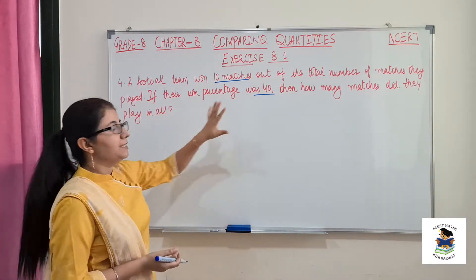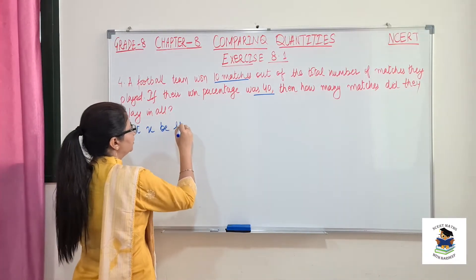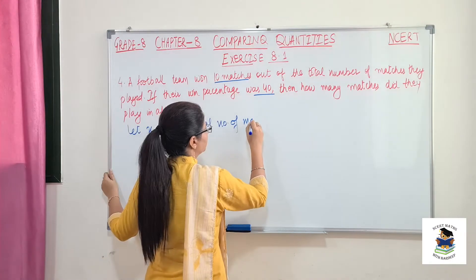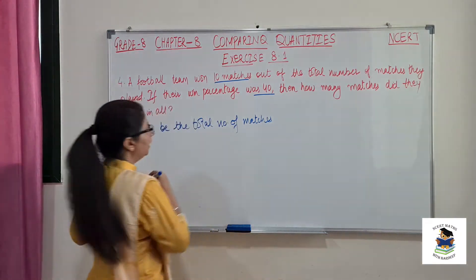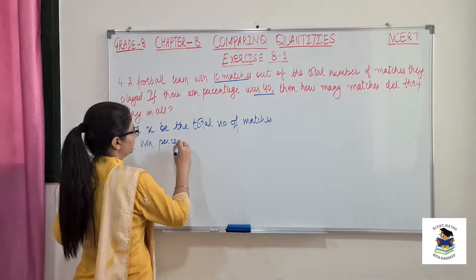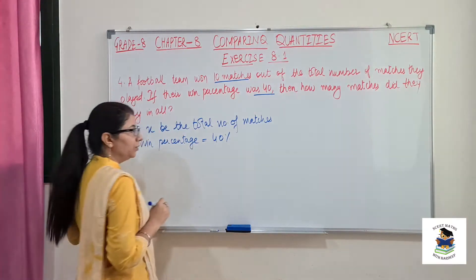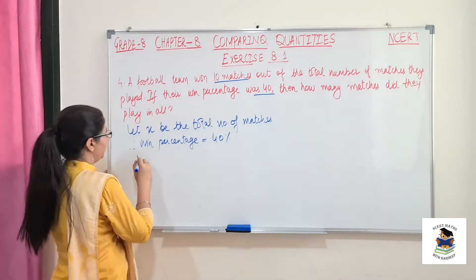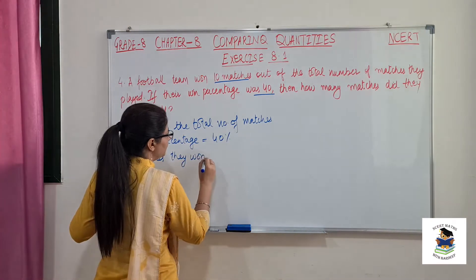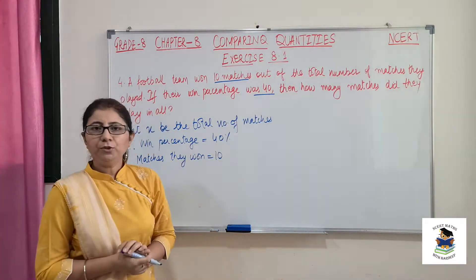Whatever we need to find, we will assume it to be x. So let x be the total number of matches they have played. Therefore, win percentage is 40% and matches they won is equal to 10. Now let's see how to use these numbers to find the total matches played.